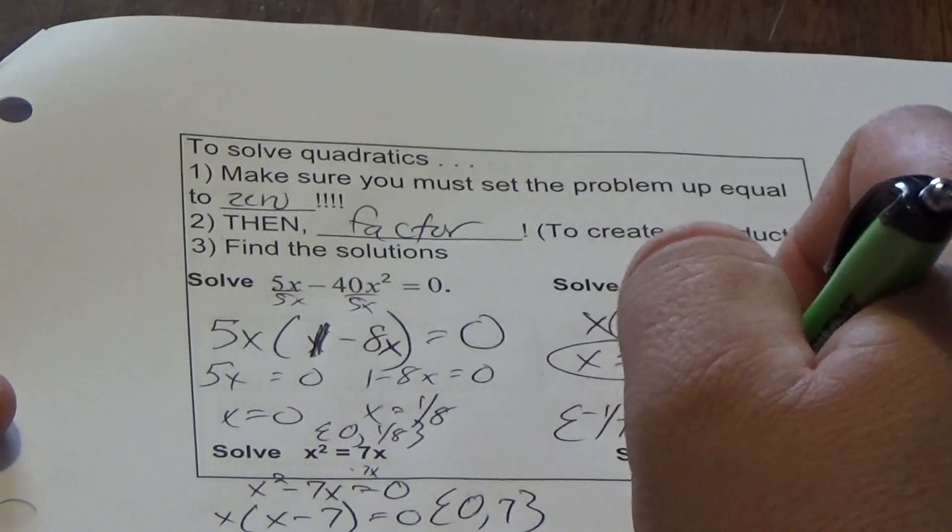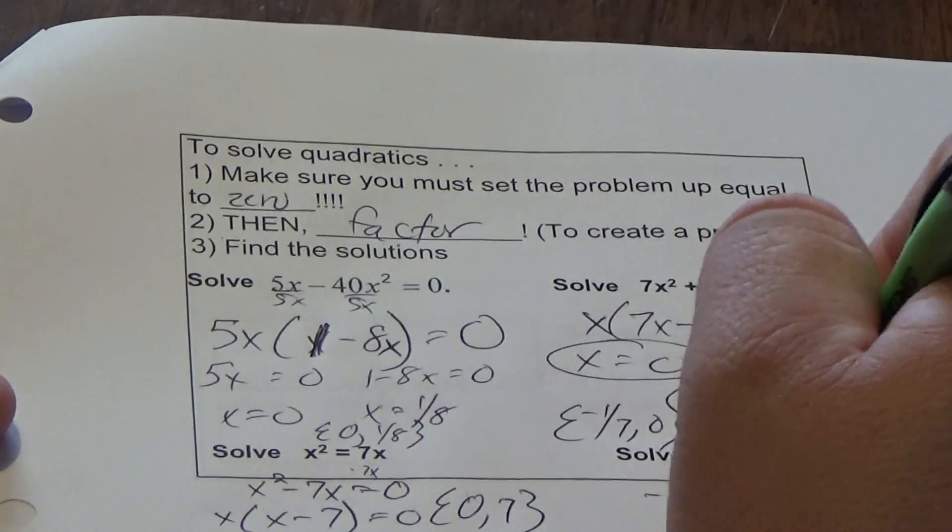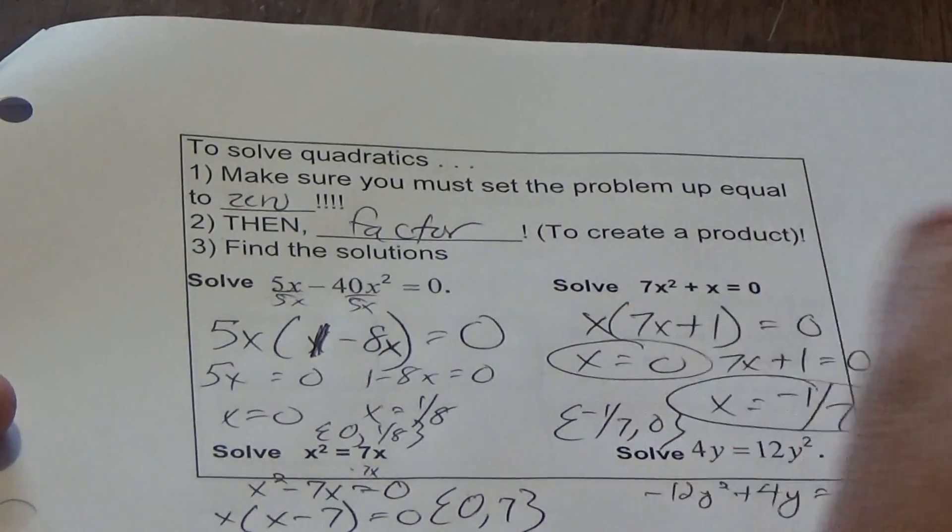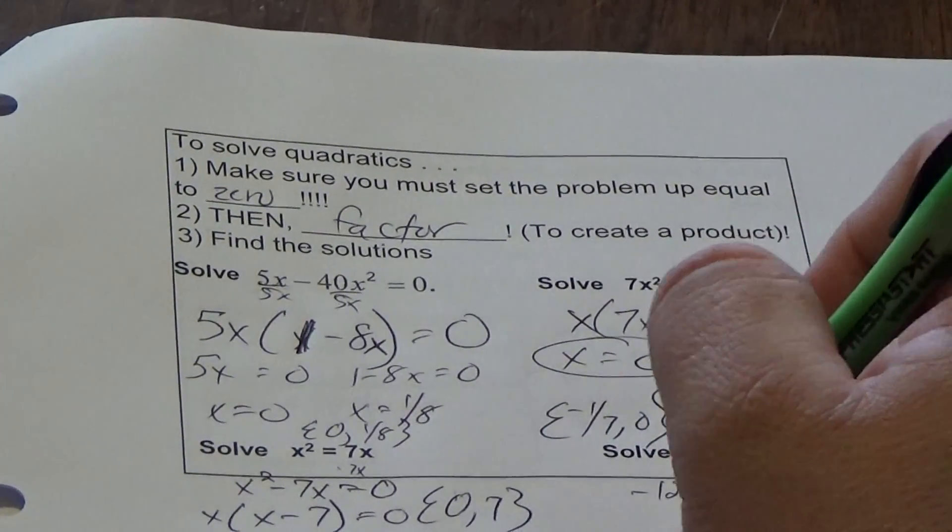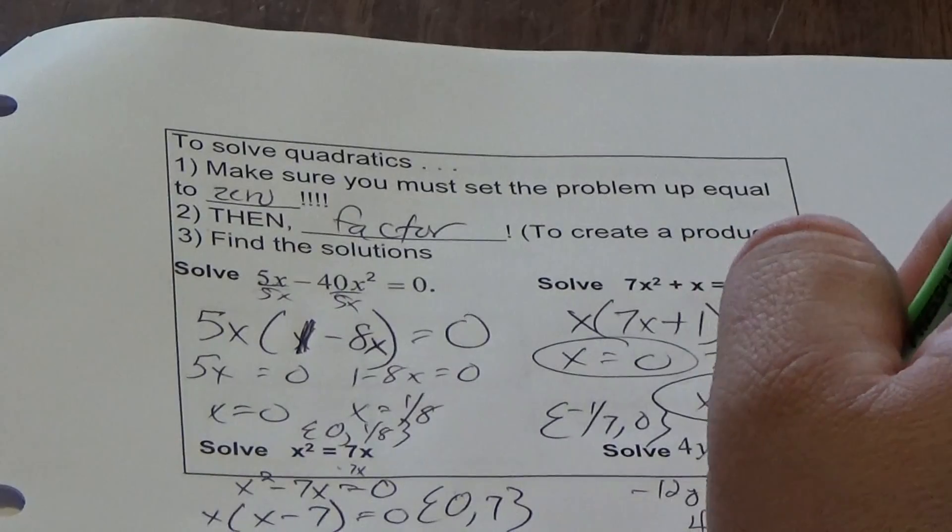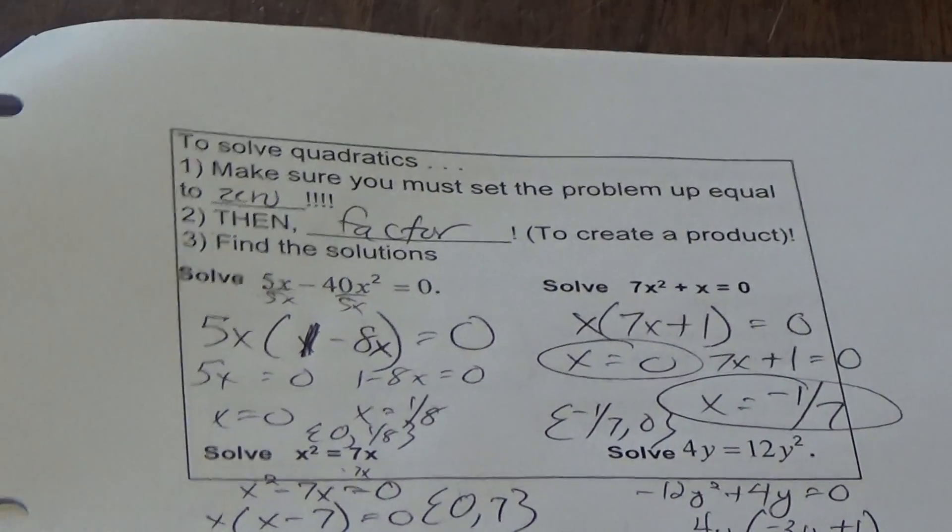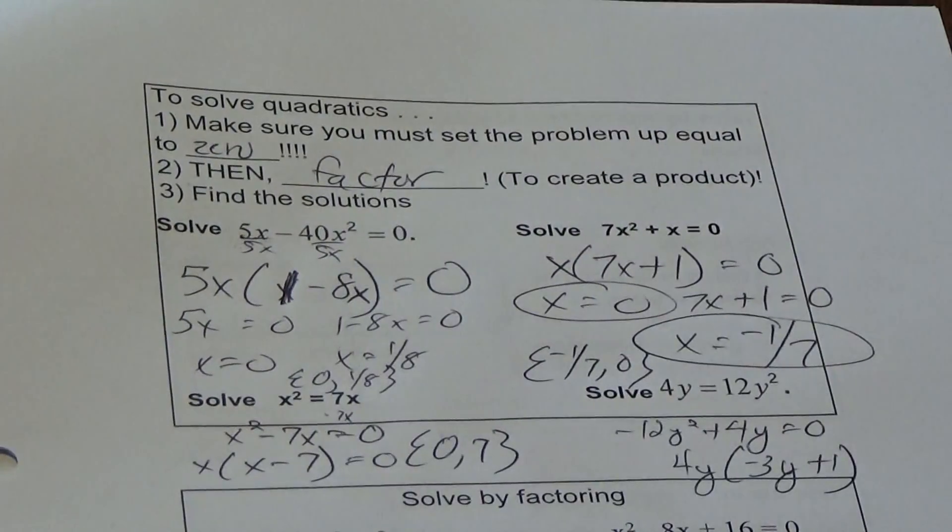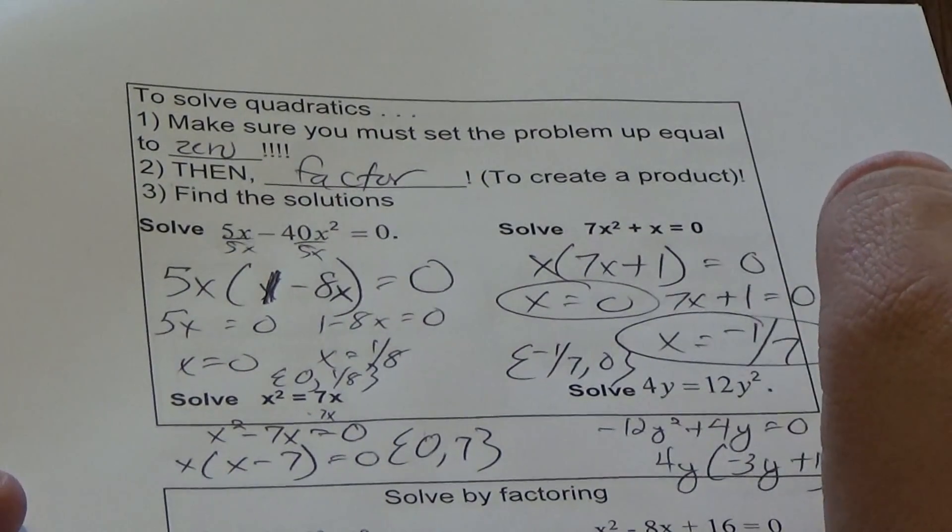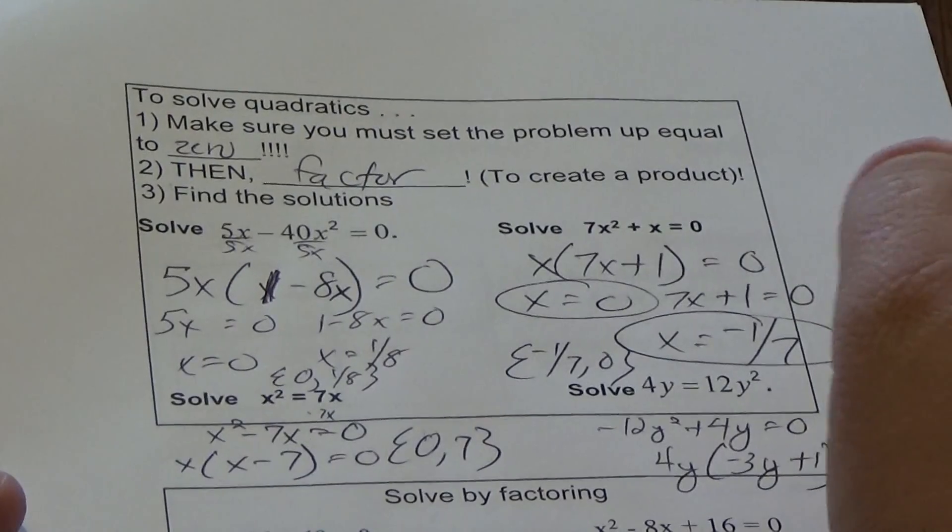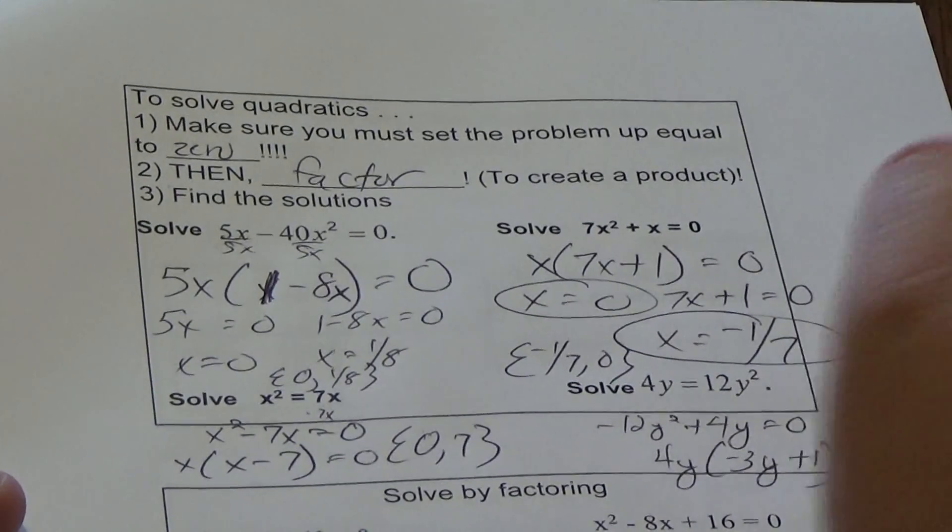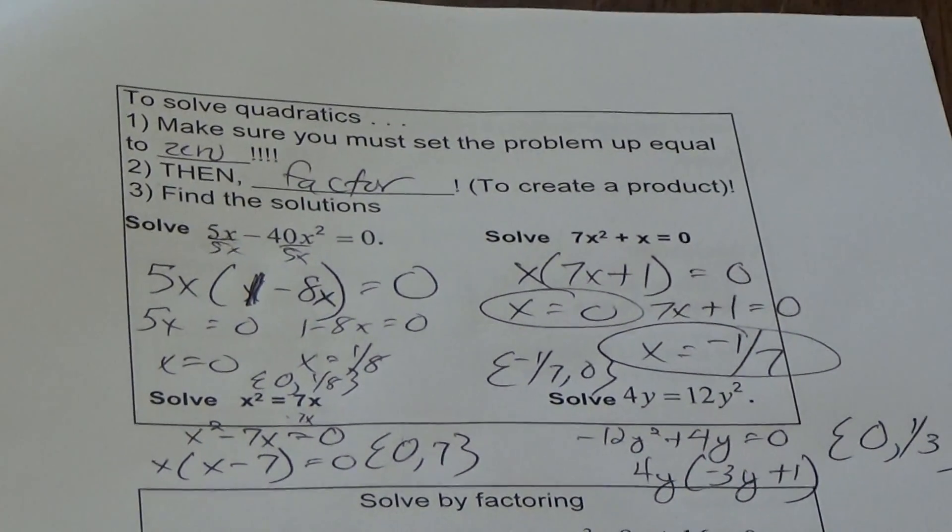Same thing here: negative 12y squared plus 4y equals 0. 4y is my GCF, so I get 4y times (negative 3y plus 1), and my answer is {0, 1/3}.